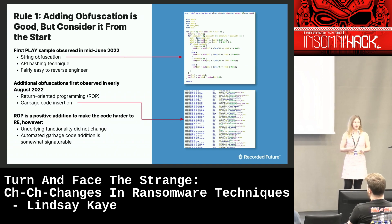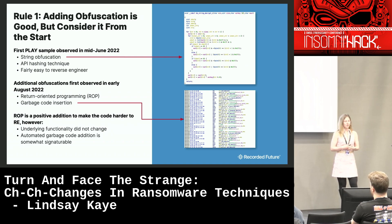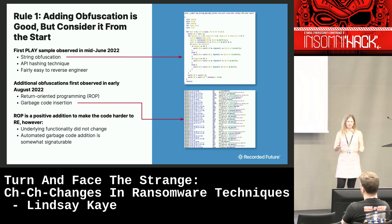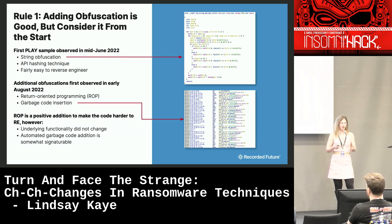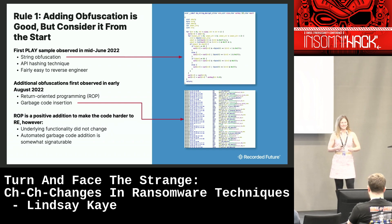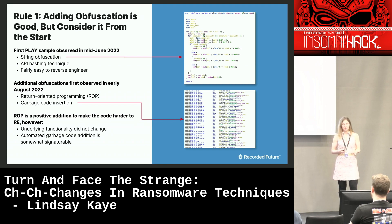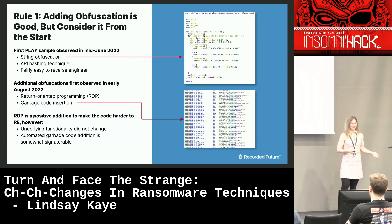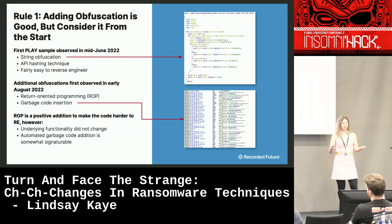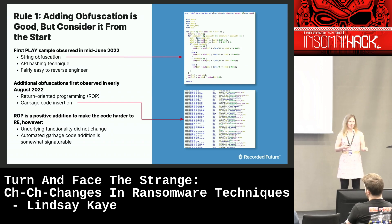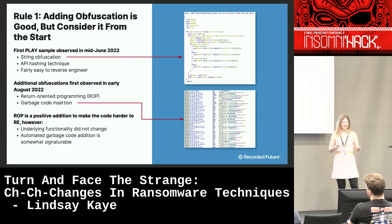The additional obfuscations came in August 2022: the ROP and garbage code insertion. The garbage code just does nothing useful and makes you look at more stuff. While ROP is a positive addition making the code harder to reverse engineer, notably the underlying functionality didn't change — so if you reverse engineer an unobfuscated one, it's easy to match up. Additionally, the automated garbage code insertion was actually pretty signaturable — I was able to write a signature for how they did it to find other copies. So if you're trying to make your malware less signaturable, that wasn't super successful.